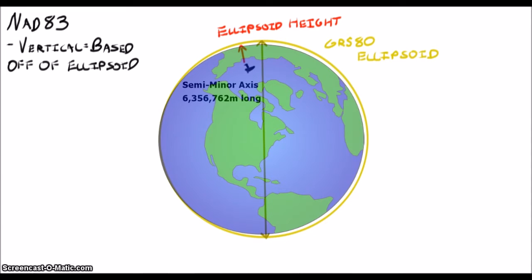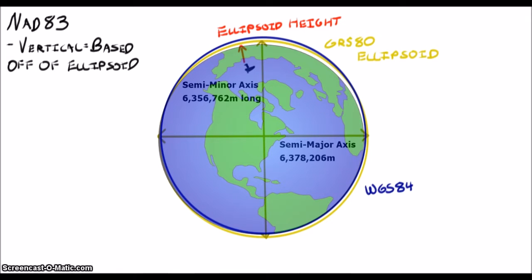We can define an ellipsoid with just a few parameters. The GPS satellites are positioned using a similar, although slightly different reference ellipsoid, known as WGS84. But because both NAD83 and WGS84 ellipsoids are simple mathematical models, we can pretty easily transform measurements between the two.